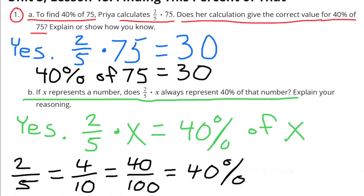B: If x represents a number, does 2 fifths times x always represent 40% of that number? Yes, 2 fifths times x equals 40% of x. 2 fifths is the same thing as 4 tenths, which equals 40 hundredths, which is the same as 40%. So 2 fifths times x is 40% of x, just like 4 tenths times x or 40 hundredths times x would also equal 40% of x.